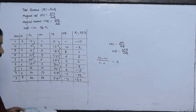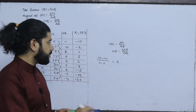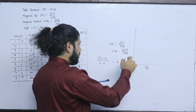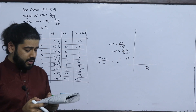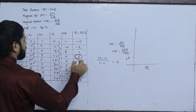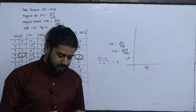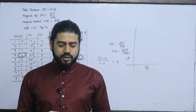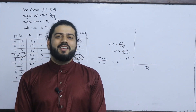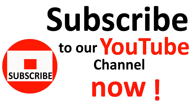Maximum profit condition: derive the TR curve and TC curve according to the table, derive the profit, and identify the maximum profit. Maximum profit is at q equals 3. Thank you.